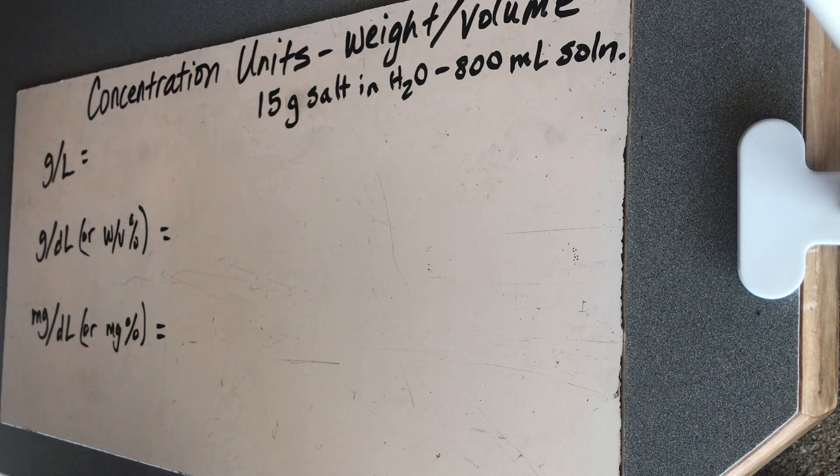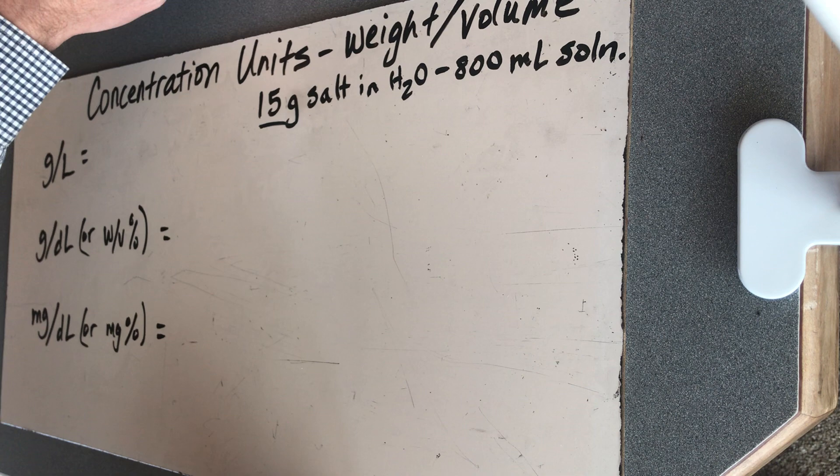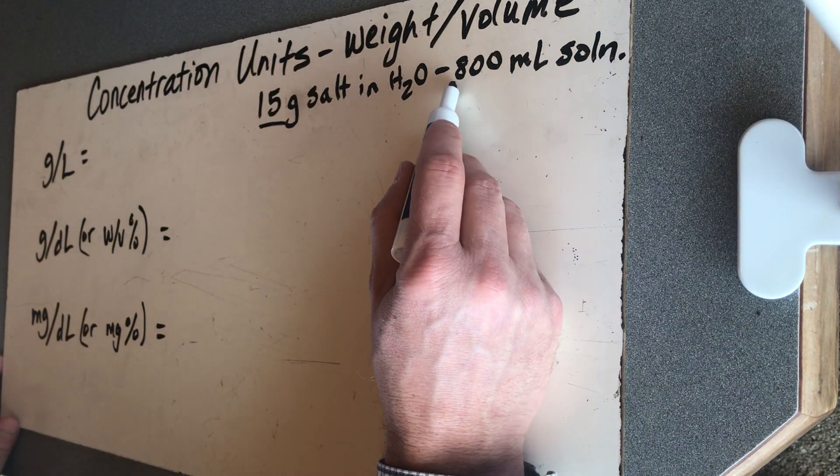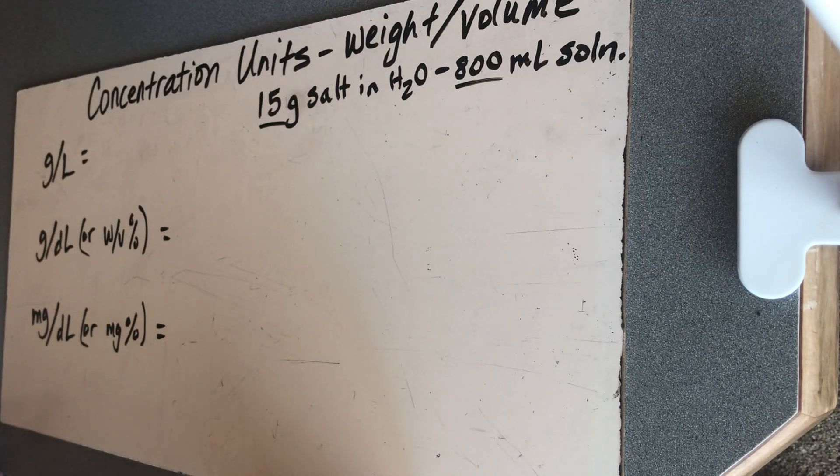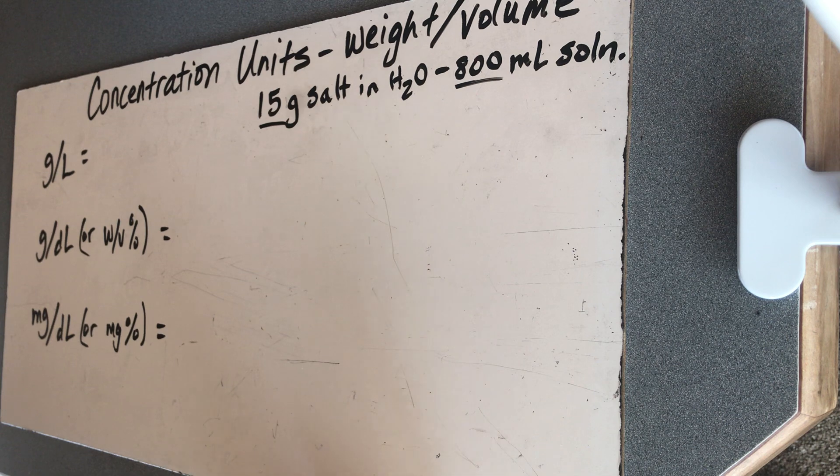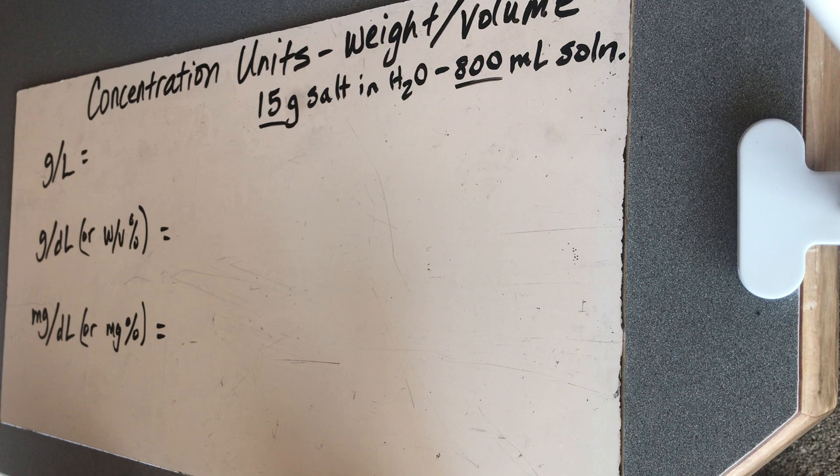I made up a situation right here where we're going to take 15 grams of salt, and we're going to dissolve it in enough water to make about 800 milliliters of solution. This is not an extremely diluted solution, but it's also not that highly concentrated either. And what we're going to try to do is describe this with five different units you're going to see show up.